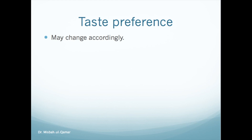Taste preference simply means that an animal will choose certain types of foods over others, and the preference often changes in accord with the body's need for certain specific substances. The phenomenon of taste preference or taste aversion results from a mechanism located in the central nervous system, not in the taste receptors themselves.